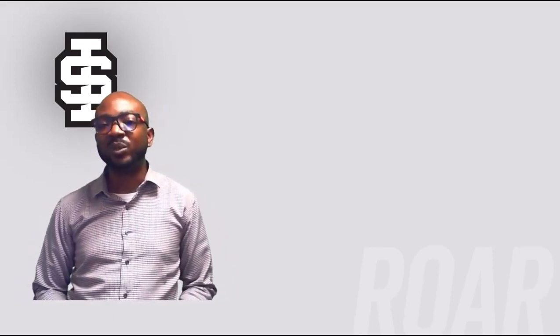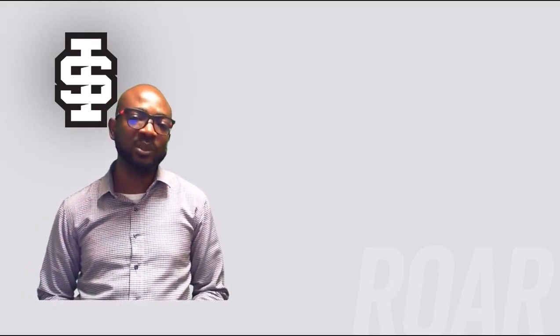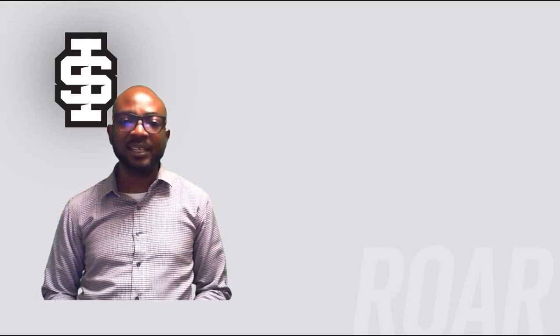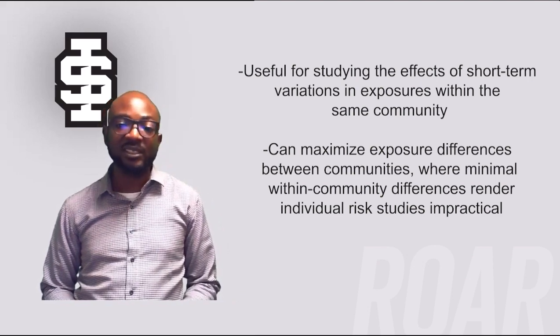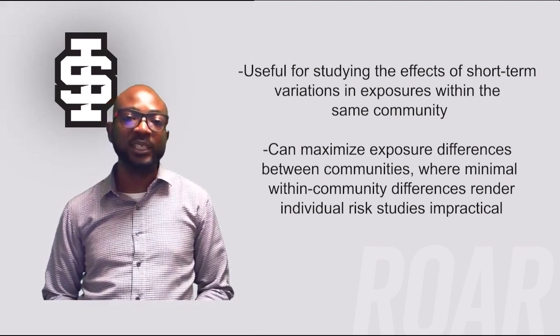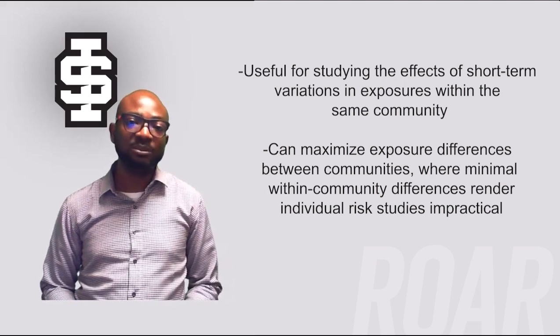In the United States and many other countries, data are regularly obtained on air quality, water quality, weather conditions, the size of the population, the status of the economy, and the health of the population. For example, the United States Environmental Protection Agency collects air pollution data at selected locations around the country using the National Air Quality Monitoring Network. These monitors collect air pollution data at the group level. In contrast, to collect individual level air pollution exposure data, a person would need to wear an exposure monitor. Ecologic studies are also useful for studying the effects of short-term variations in exposures within the same community, for example, temperature and mortality.